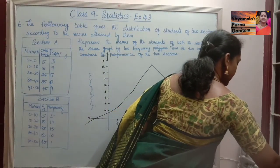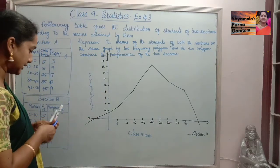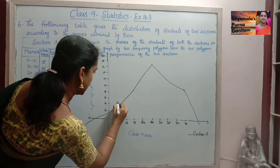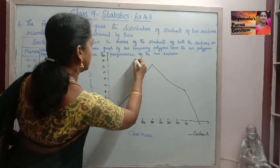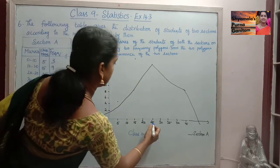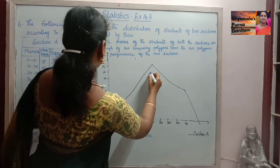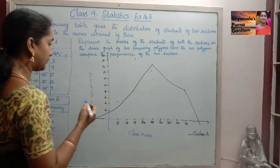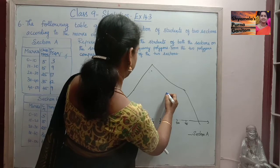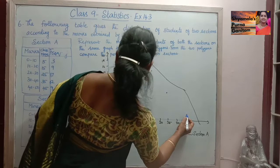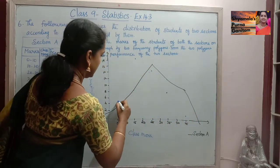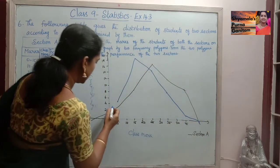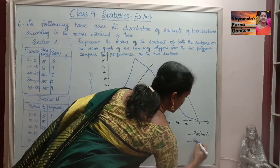For Section B, we plot the points: class mark 5 with frequency 5, then 15 and 19, then 25 and 15, then 35 and 10, and finally 45 and 1. We join these points and complete the polygon by closing it to 0 on both sides of the x-axis. This blue color represents Section B.